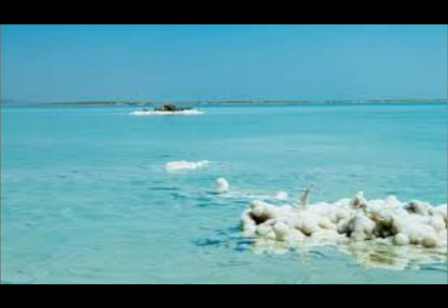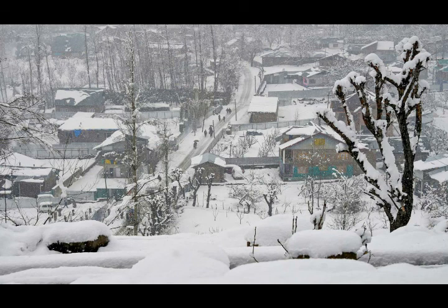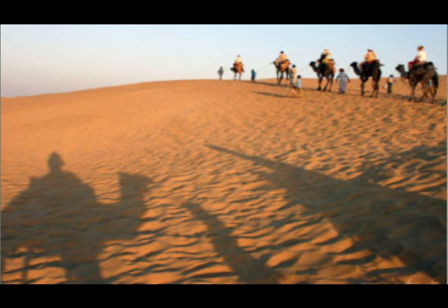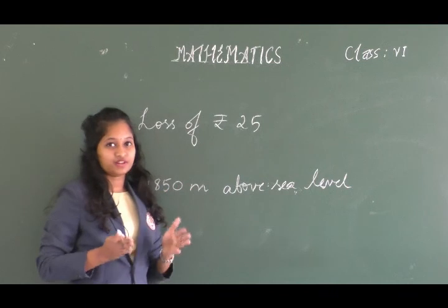You can see an image of a place with cold climate, represented in temperature as minus 5 degrees Celsius. And a place with hot climate is represented as plus 5 degrees Celsius. All these examples represent opposite situations in our day-to-day life.